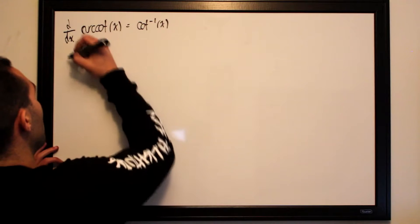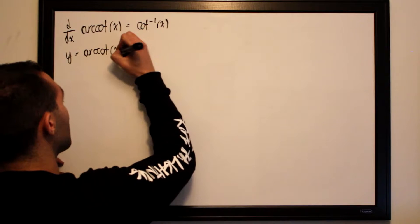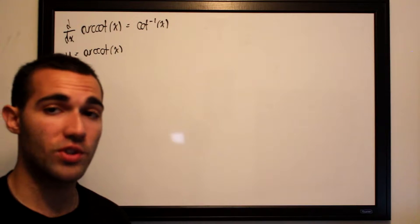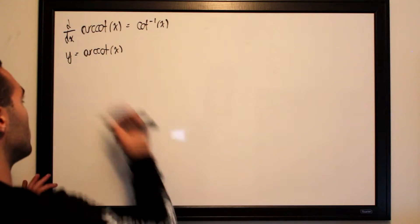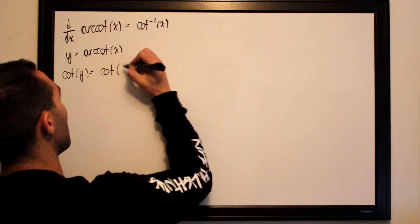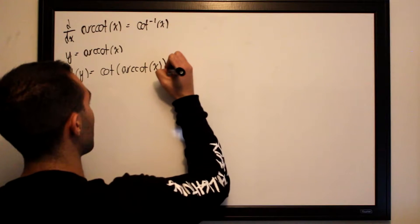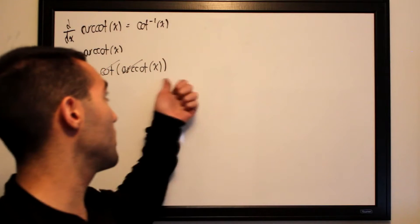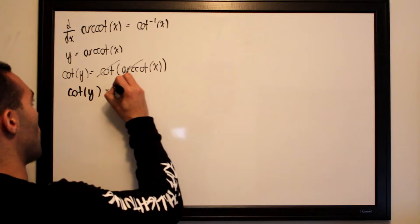We will make our function y equal to arc cotangent of x. Then we take the cotangent of both sides in order to cancel out the arc cotangent on the right side. The cotangent and arc cotangent cancel each other out, leaving us with cotangent of y equals x.